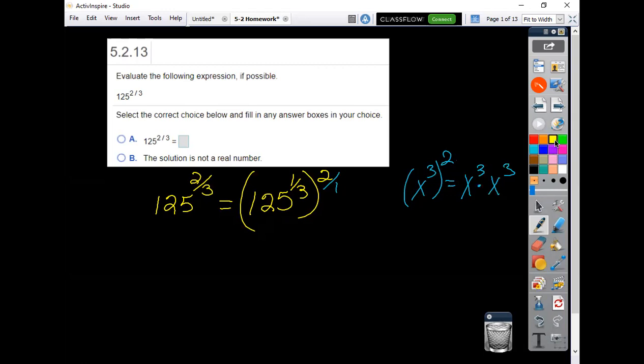If you think about this, whether you need to write it out or not, this is x times x times x and the second one is x times x times x. So how many do you have? I have six of those x's multiplied, so x to the sixth power. So what did you do with these? You multiplied them. What did you do with these? You added them.